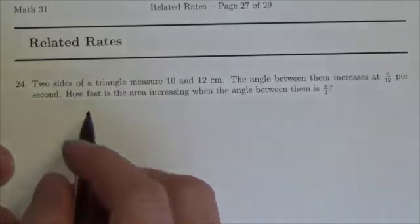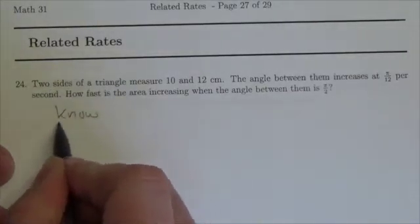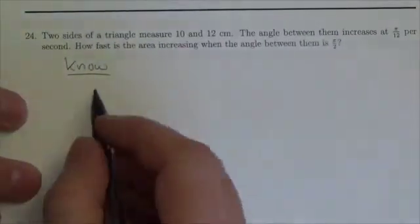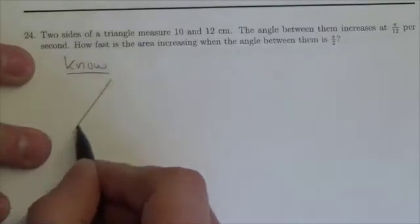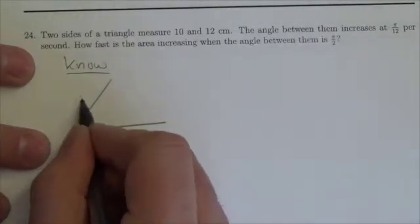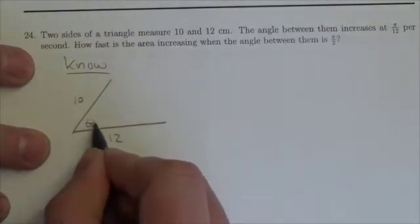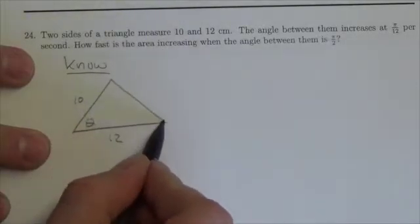Okay, so what do we know? Well we got this triangle here. Let's say this is 10, this is 12, here's my angle theta, drawing the two ends here.